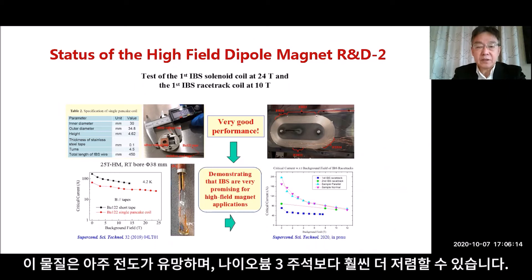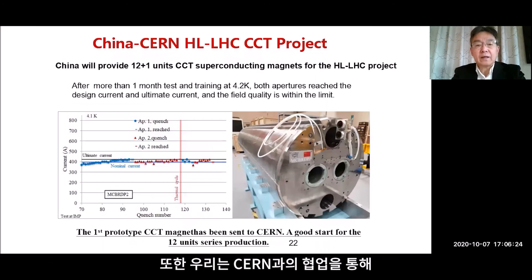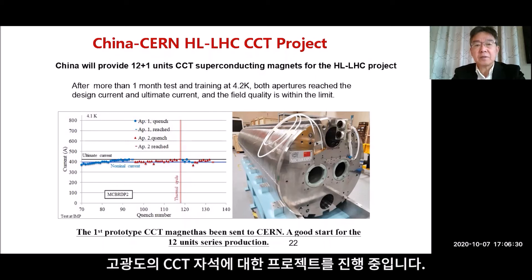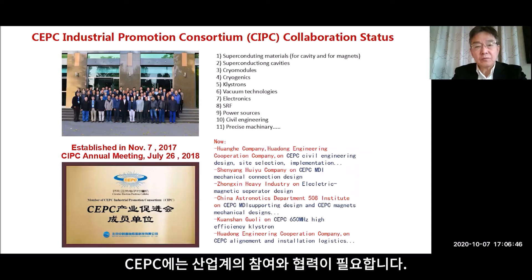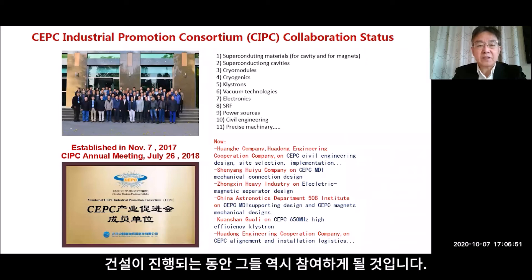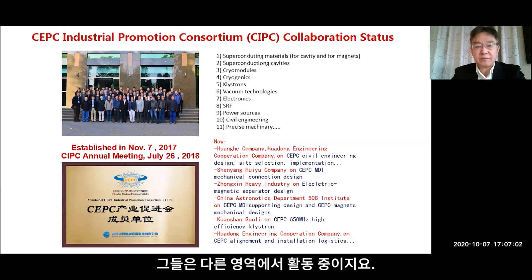This iron-based superconducting material is very promising and can be much cheaper than niobium-3 tin, which is very important for SPPC. The R&D is ongoing, and first tests have shown the technology is promising. We are also working in collaboration with CERN — the first model of the high-luminosity LHC CCT prototype magnet has been finished and shipped to CERN, with another 12 units to follow.